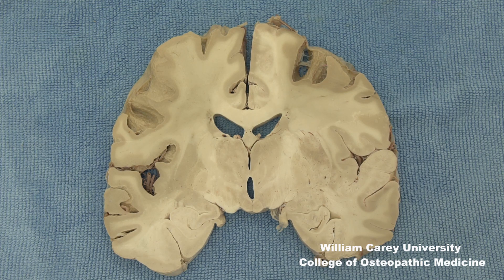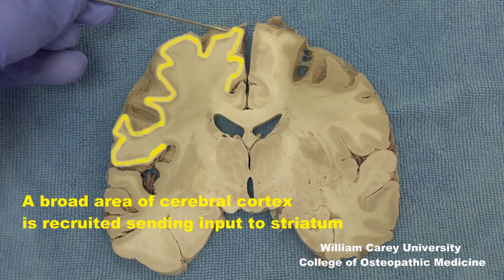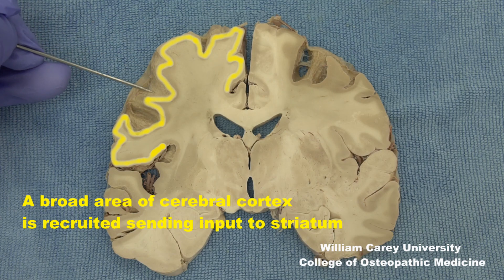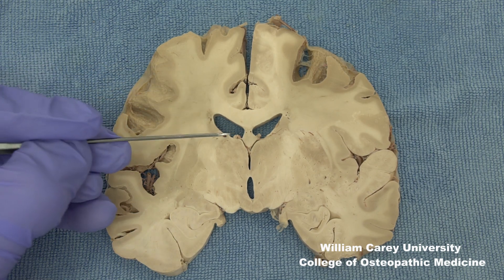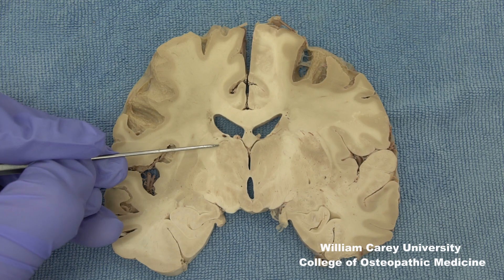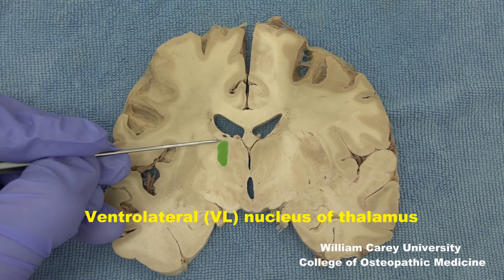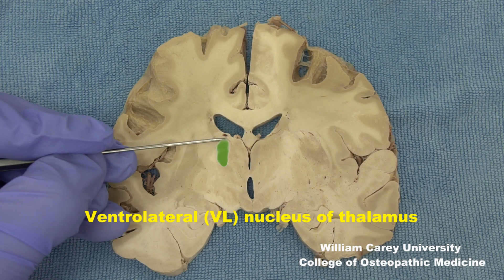In addition, providing inputs to the striatum, a broad area of cerebral cortex is recruited. For the outputs of basal ganglia via the pallidum, these will go to certain thalamic nuclei. For example, in this section the VL or ventral lateral nucleus of thalamus can be identified.